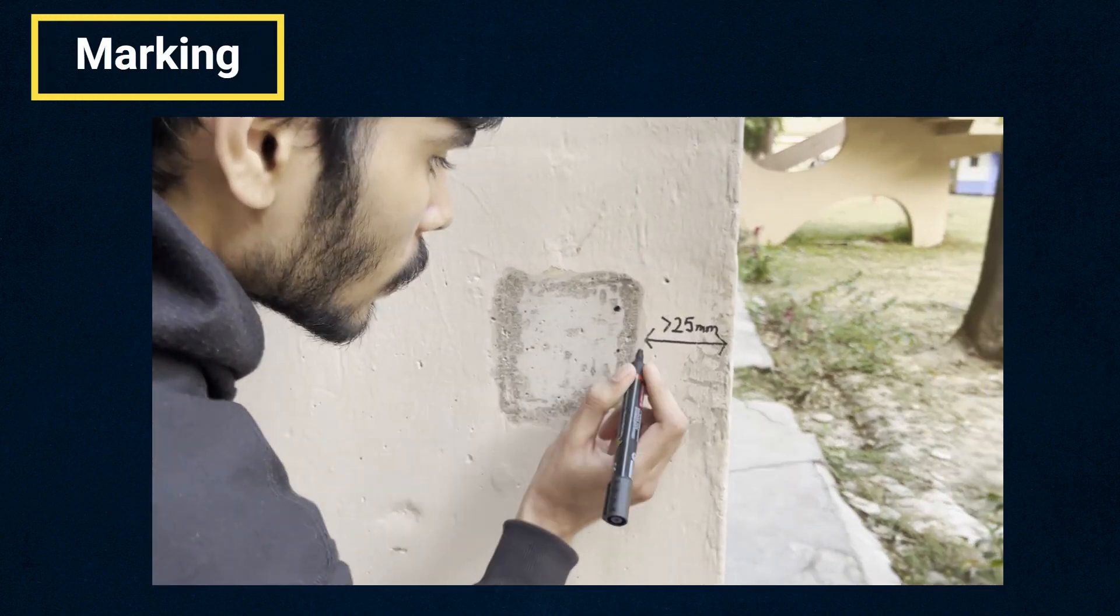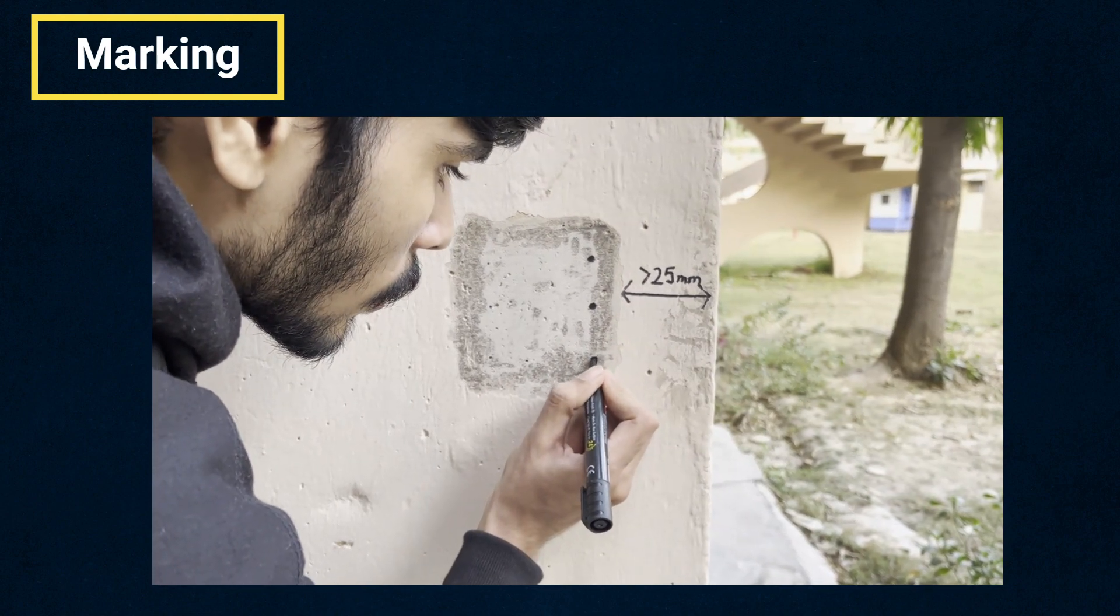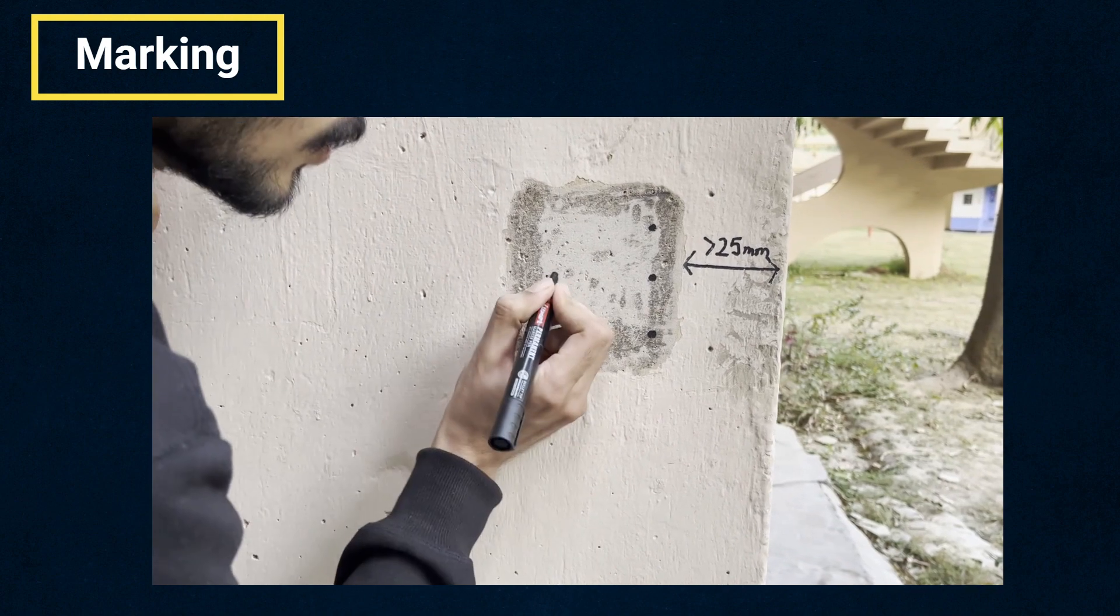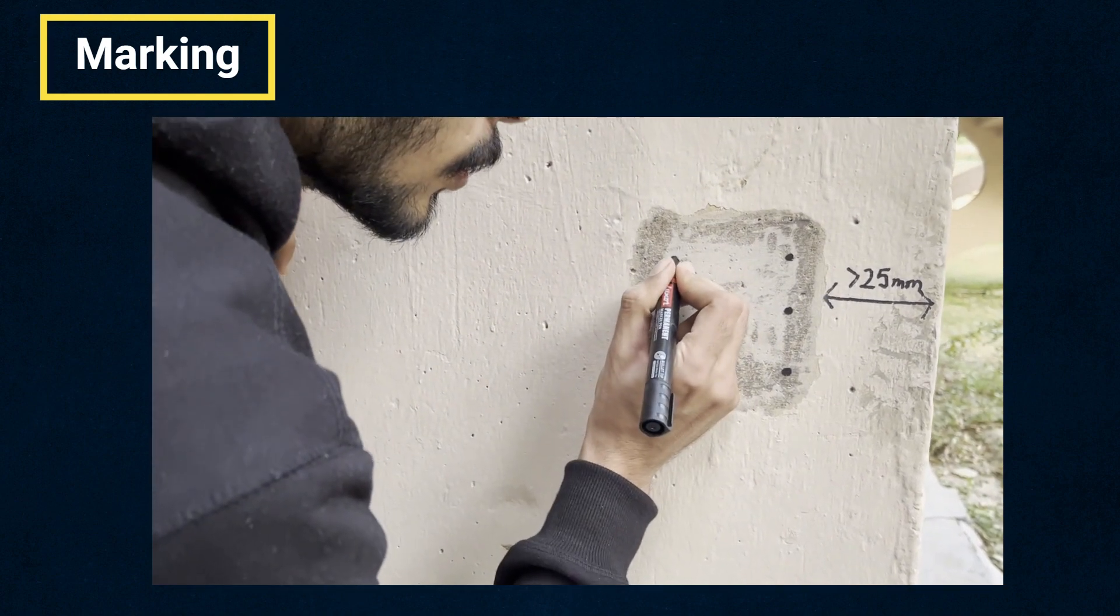We will mark at least 6 impact points around each observation point. Here it is important to note that the rebound hammer test shall be conducted around all the observation points on all accessible faces of the structural element.